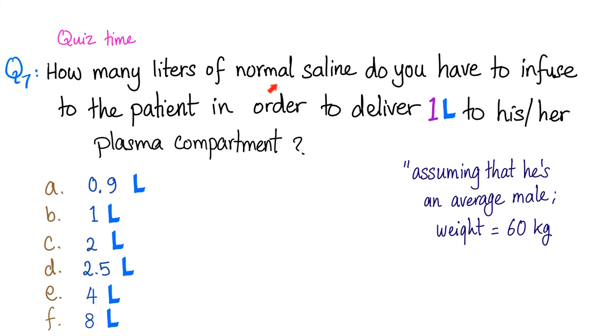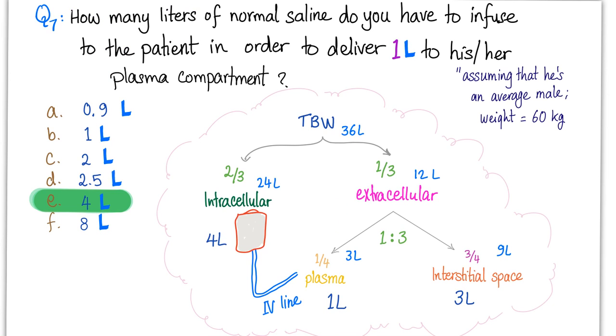Next question. How many liters of normal saline do you have to infuse into a patient in order to deliver just one liter to his or her plasma compartment, assuming that he's an average dude with a weight of 60 kilograms? And here is how you do it, Jeffrey. When you infuse the normal saline, you'll infuse it all intravenously. No kidding. This is the plasma compartment. And as you know, plasma is just one, two, three interstitial space. So interstitial space is three fourths of the extracellular fluid and the plasma is just one fourth. Since the plasma is only one fourth of the extracellular fluid, here's how you do it. One fourth of X equals one liter. Therefore, X equals four liters. And this is the answer.